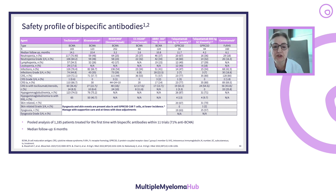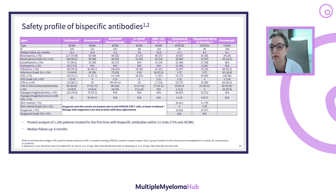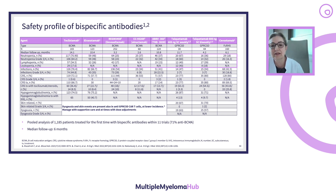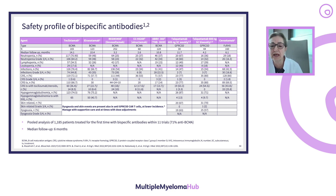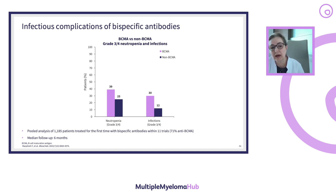This results in infections, and grade 3-4 infections are around 40% in the first two anti-BCMA products, going down to around 30% with biweekly Talquetamab. The usual belief is that infectious problems are much less with non-BCMA agents, which can also be seen in the next slide — both neutropenia and infections differ between BCMA versus non-BCMA.